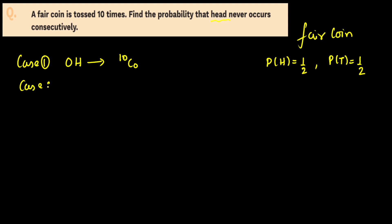Case 2: 1 head and 9 tails. It is not possible to get 2 heads consecutively because the number of heads is 1 only. Now I'm going to use the gap method. 10 tails will generate 10 gaps, and out of those 10 gaps I'm going to place the 1 head — that is 10C1.